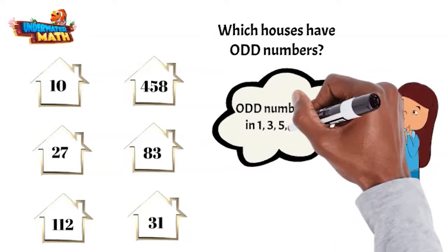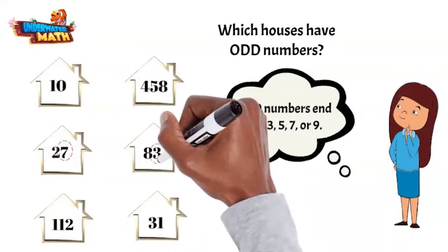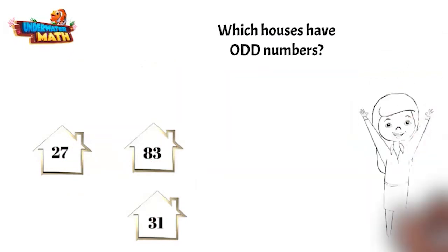Remember, odd numbers end in 1, 3, 5, 7, or 9. 27, 83, and 31 all end in an odd number. So these are the houses Bethany is looking for.